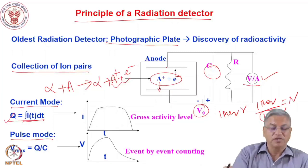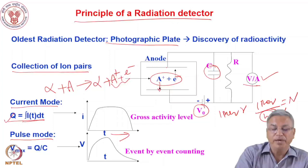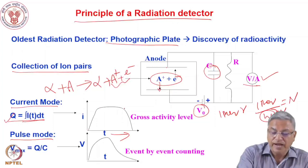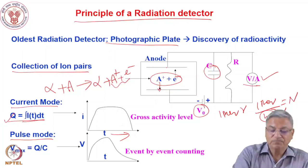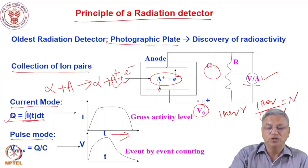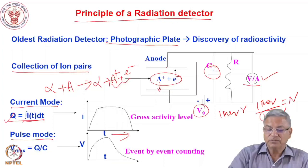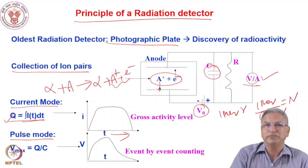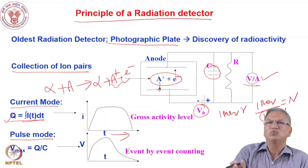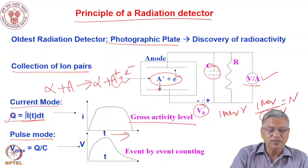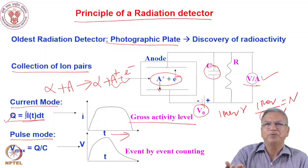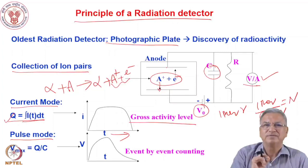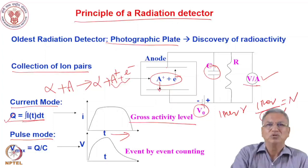Multiple events lead to a flow of current in the circuit. This current mode mechanism is not used for counting activity but gives you the gross activity level, like a survey meter in the laboratory. The current level — how many microamps, nanoamps, milliamps — tells you the level of radiation. But if you want to count the activity quantitatively, how many counts per second, then you require pulses. So you need to shape the pulse.